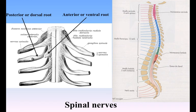The pairs of spinal nerves are grouped as follows: cervical 8, thoracic 12, lumbar 5, sacral 5, coccygeal 1. For convenience of description, the Medulla Spinalis is divided into cervical, thoracic, lumbar, and sacral regions, corresponding with the attachments of the different groups of nerves.